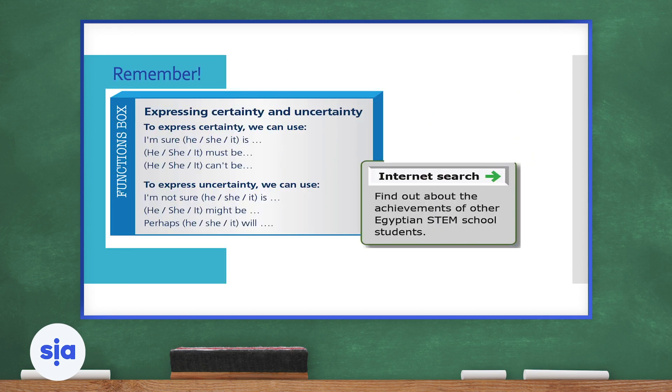We're going to jump to the functions box. So we're going to practice what we've learned in lessons one and two, unit four, expressing certainty and uncertainty. So to express certainty, we can use, I'm sure he, she, it is blank. So we can say whatever we want about something that we're sure about. I'm sure he is tired or he must be exhausted. Or we might say she can't be telling the truth. To express uncertainty, we can say, I'm not sure he is the perfect person for the job. Or we might say she might be too tired to go to the party. Or I might say perhaps it will be raining tomorrow. I need to get an umbrella.